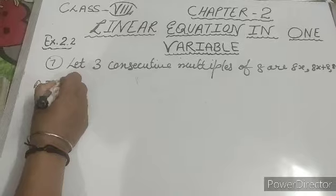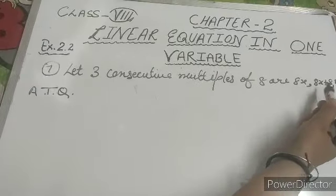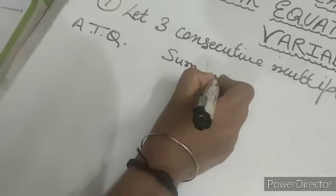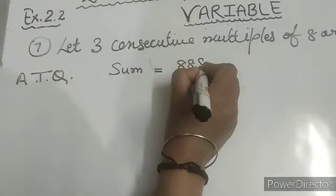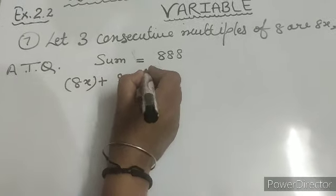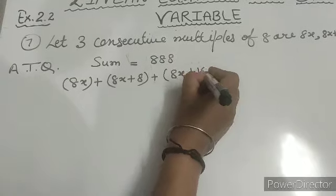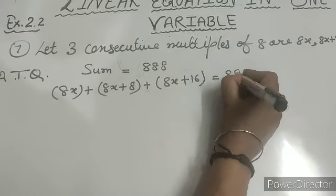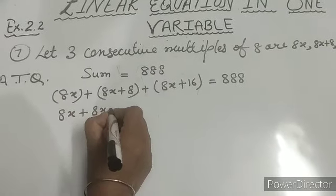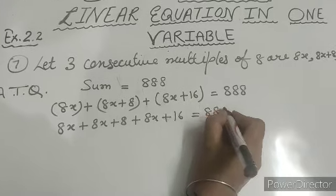According to the question, the sum of these 3 numbers — they are consecutive, without any break — their sum is equal to 888. So: 8x plus (8x plus 8) plus (8x plus 16) is equal to 888.